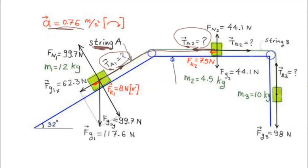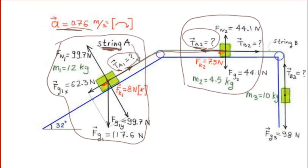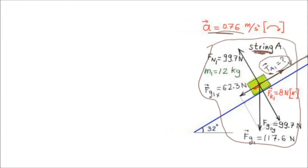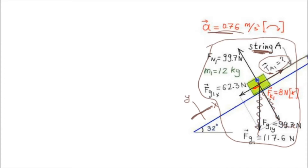We can either use block 2 to calculate TA2, or we can use block 1 to calculate TA1. I find block 1 is easier. This is the X direction — the parallel direction — and this is the Y direction. In our calculation, we only consider forces in the X direction, so we ignore the normal force, gravity in Y, and other perpendicular forces.